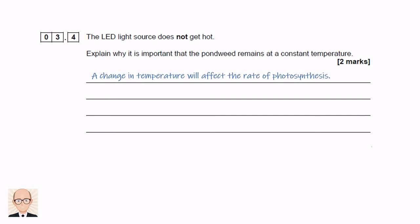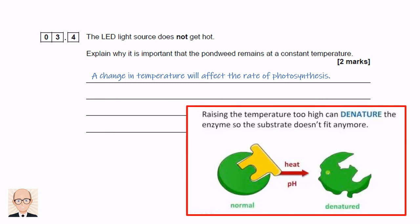We also know from the enzymes topic that if temperature increases too much, the shape of the plant's enzymes may become distorted, or we say that the enzyme has been denatured. In this case, their substrates will no longer fit the active sites, and the biochemical reactions inside the plants will stop. Therefore, the plant will die, and the rate of photosynthesis will drop to zero. We can summarise all of this by saying a high temperature will denature the enzymes that control photosynthesis.